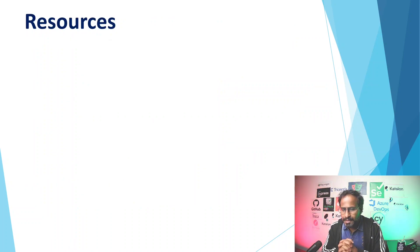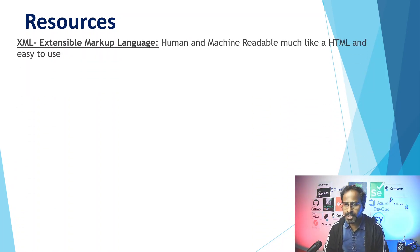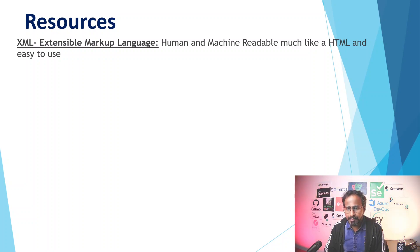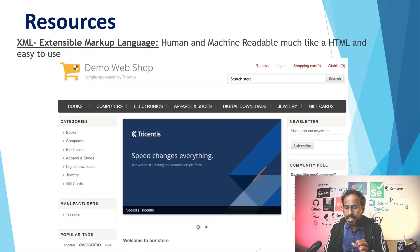Now let's discuss the different resources we are going to use in our upcoming lessons on API automation using Tricentis Tosca. First, we need to know what XML is — XML stands for Extensible Markup Language, which is both human and machine readable, much like HTML, and is easy to understand and use. We have already used the Demo Web Shop for our web automation, and in the same way we are going to use this Demo Web Shop built by Tricentis sometimes during these lessons.